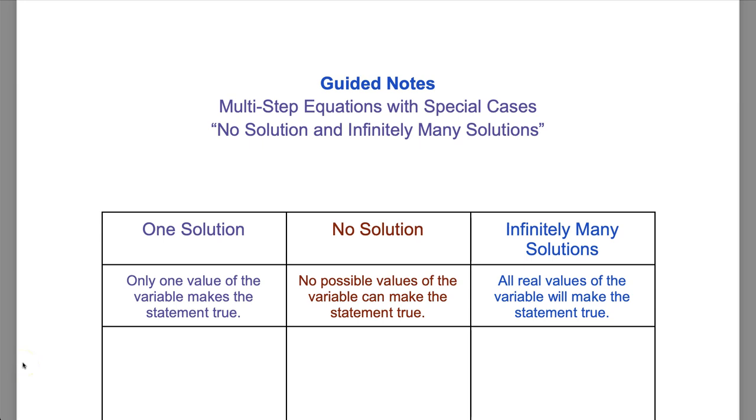Today we're going to talk about multi-step equations with special cases. Now, what's a special case? When we deal with equations, we're saying two expressions are equal. Maybe we say 3x equals 15, something like that. And there is a value of x that makes that statement true because the equation means that two sides are equal in value. But it doesn't always work like that, unfortunately.